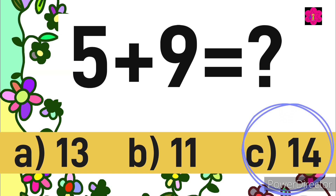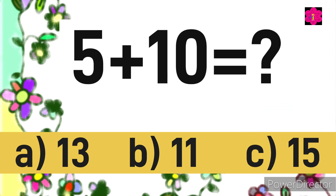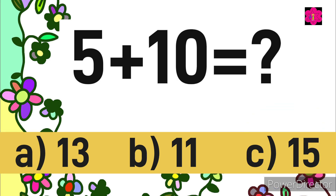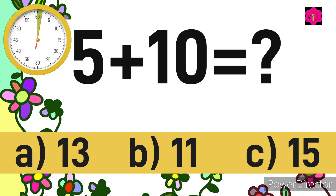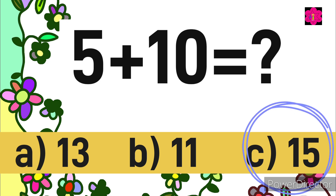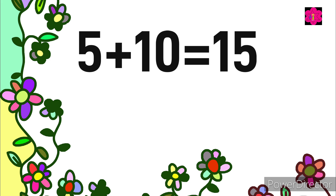Okay so the next sum is 5 plus 9 is equal — your time starts now. And then 5 plus 10 is equal — your time starts now. Yes, the correct answer is 15. 5 plus 10 is equal to 15.